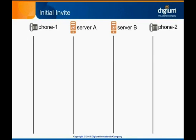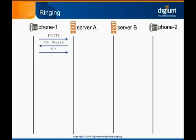When someone dials a number or extension from a SIP phone, the phone will send an INVITE message to Asterisk. This INVITE message is a request to establish a SIP session. Our example assumes that Asterisk is configured to require authentication before it will try to connect the call. This is typical, so server A responds to the INVITE with a SIP message of 401 Unauthorized, which tells the phone that it must provide valid authentication credentials in order for the call to be placed. The phone acknowledges receipt of this message.